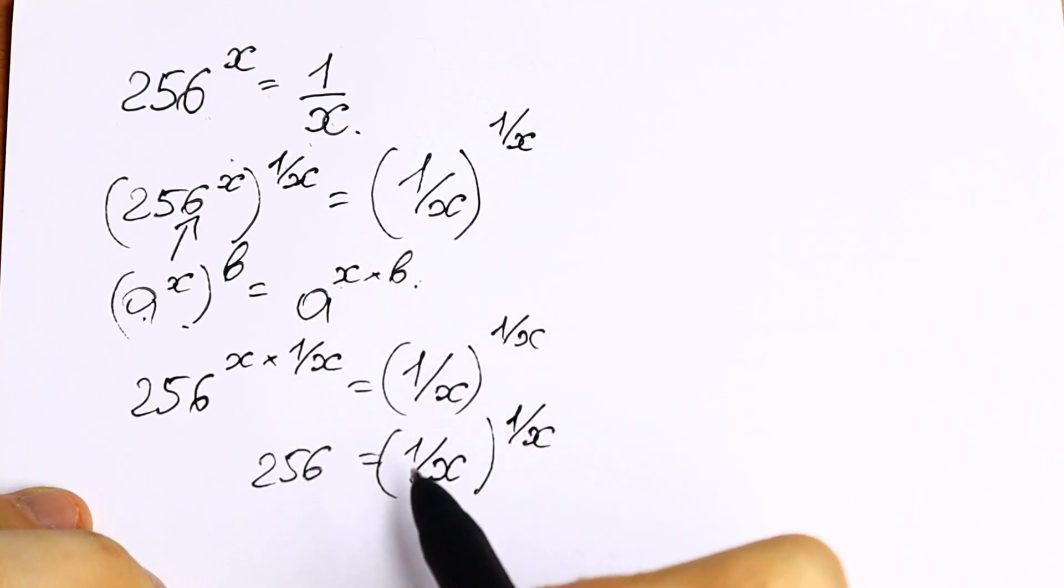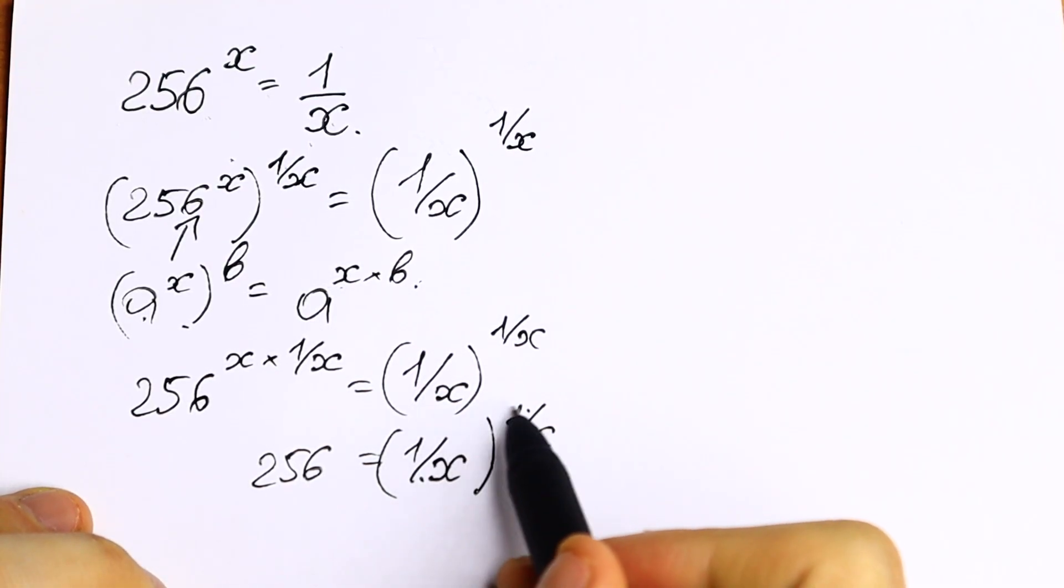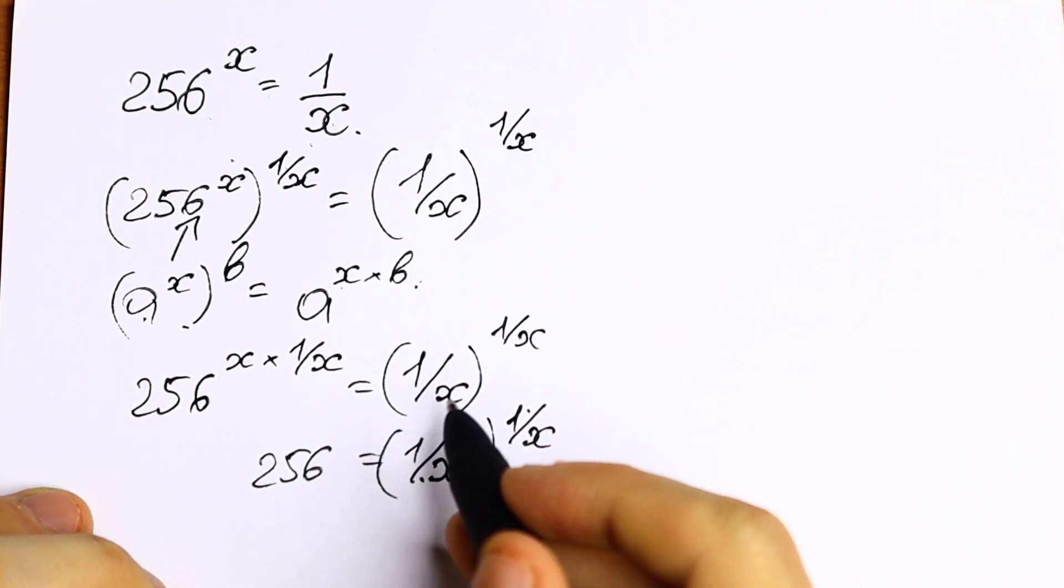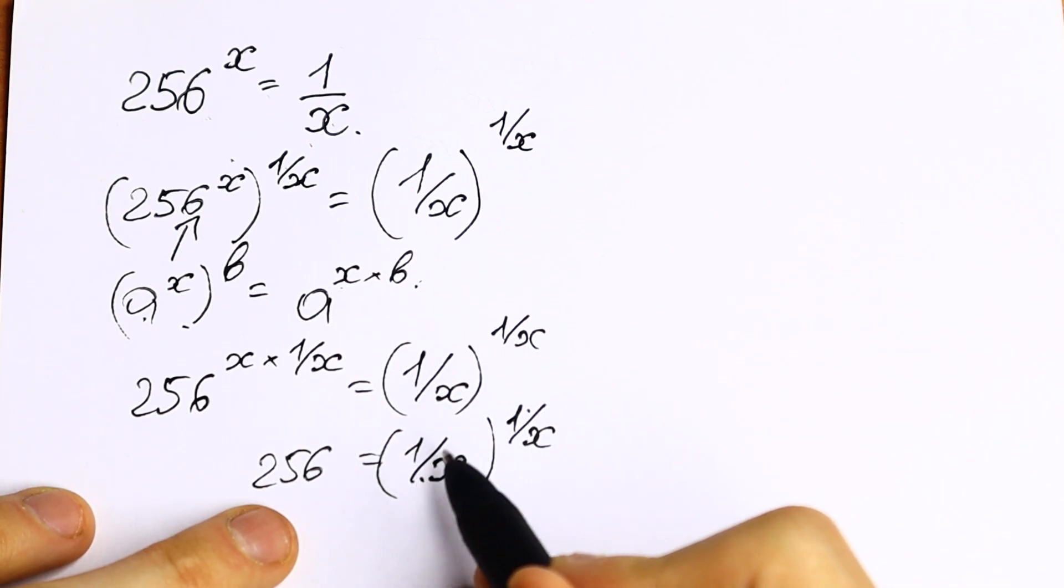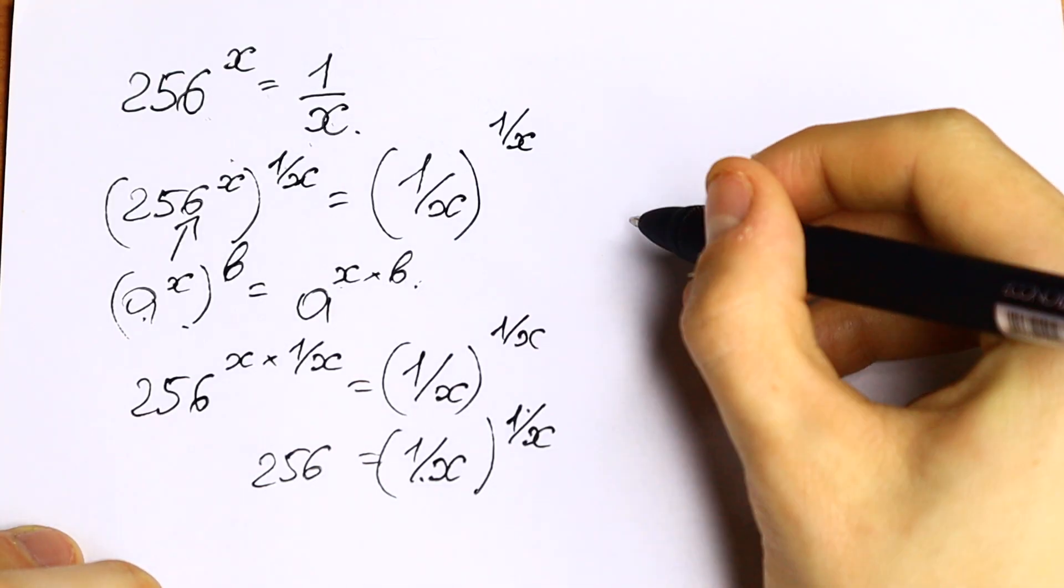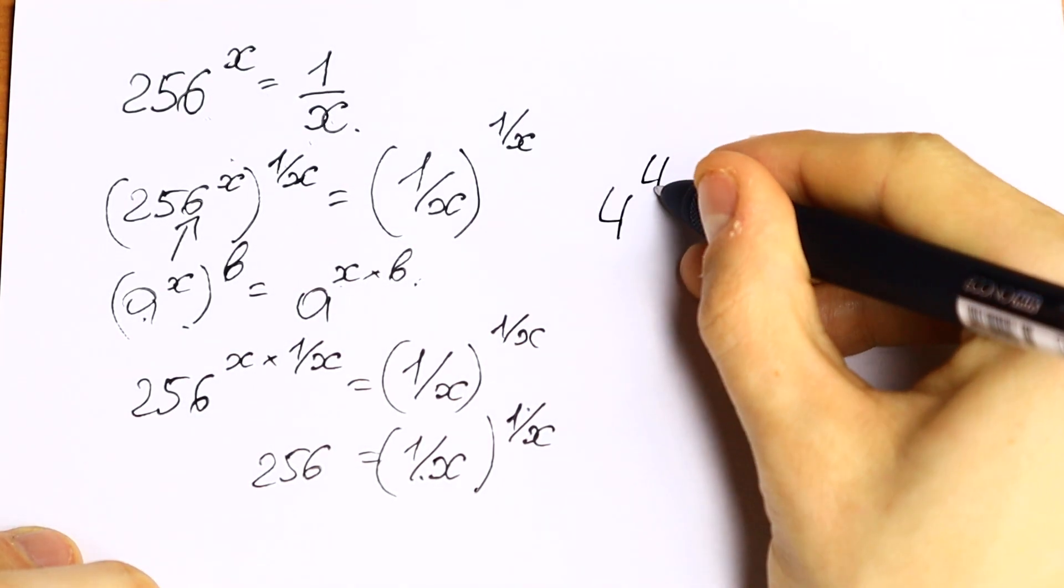So we have same base and same exponent. So this is some number on the right, and on the left we have some number as well. So right here we have same base and same exponent. And moreover, we can write this 256 as 4 to the fourth power.